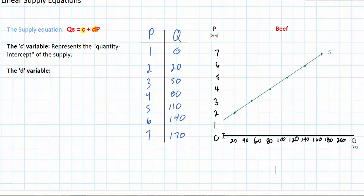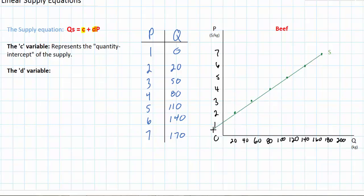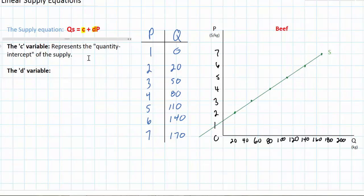As we can see, the supply curve does not actually intersect the quantity axis in the visible range of our graph. That's because if the price of beef were zero, obviously zero kilograms of beef would be provided — no producers would be willing and able to supply beef at a price of zero. However, if we were to continue our supply curve beyond the price axis all the way to where it intercepted the quantity axis, what quantity would be supplied at a price of zero? We're going to show how to calculate this quantity in a moment.